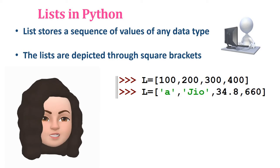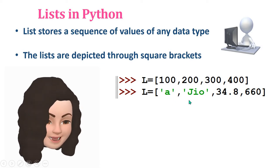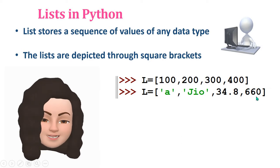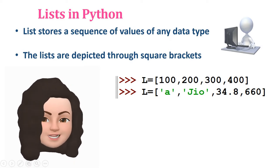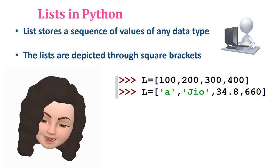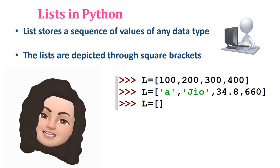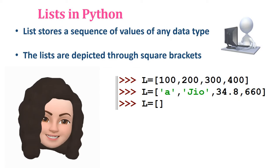The next example: L is equal to 'a', 'geo', 34.8, 660. The first 'a' is a character, 'geo' is a string, 34.8 is a float data type, and 660 is an integer. So it is a sequence of different values of different data types enclosed within square bracket and separated by comma. Also, L is equal to empty square bracket — this is known as the empty list.